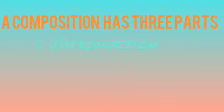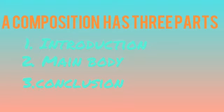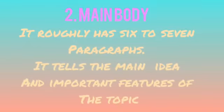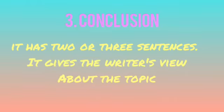A composition has three parts. Number 1 is Introduction. Number 2 is Main Body. And number 3 is Conclusion. Introduction has three or four sentences — it clearly defines what we are going to write. Main Body roughly has six to seven sentences and tells the main idea and important features of the topic. Conclusion has two or three sentences and gives the writer's view about the topic.